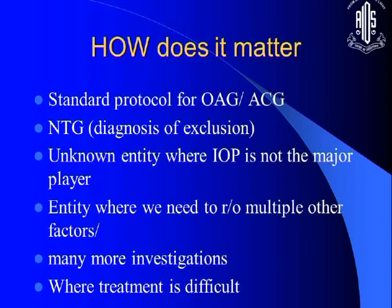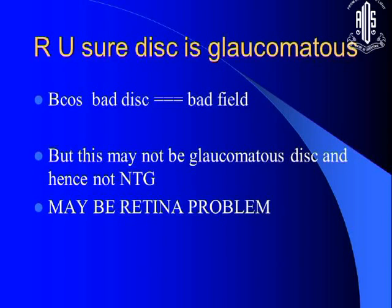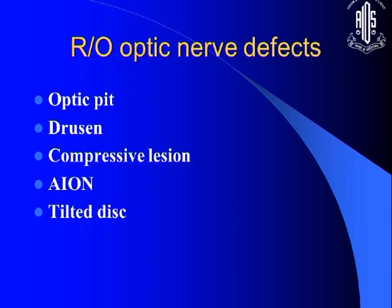First, be careful: are you measuring the pressure correctly? Once you do a diurnal variation, sometimes you find the pressure is 24 at night — so it is not normal tension glaucoma at all; it is open-angle glaucoma. Use correct technique for pressure recordings, correct for CCT, and check intraocular pressures day and night, even if you have to admit the patient. Also confirm the disc is truly abnormal from glaucoma — it could be myopia or a myopic disc mimicking glaucomatous change.